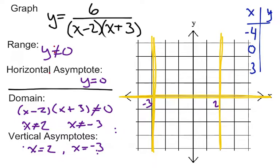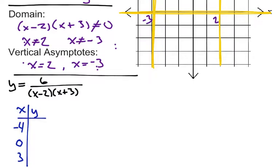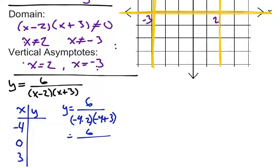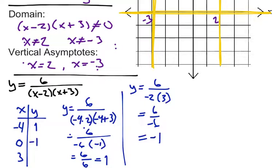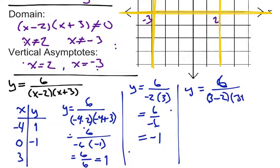Let's scroll down and show our work. First, plug in negative 4: we get 6 over (negative 4 minus 2)(negative 4 plus 3), which gives us 6 over negative 6 times negative 1, so 6 over positive 6 equals 1. Then plug in 0: y equals 6 over (0 minus 2)(0 plus 3), which is 6 over negative 6, which equals negative 1. And then plug in 3: y equals 6 over (3 minus 2)(3 plus 3), which gives us 6 over 1 times 6, which is 1.